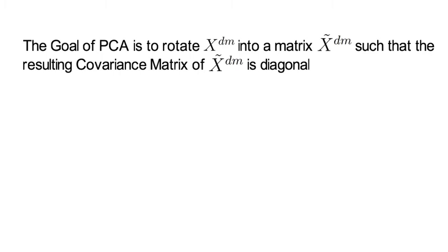Now the goal of a PCA is to rotate X^dm into another matrix which we call X tilde dm, and it shall be rotated such that the resulting covariance matrix of X tilde dm is diagonal.